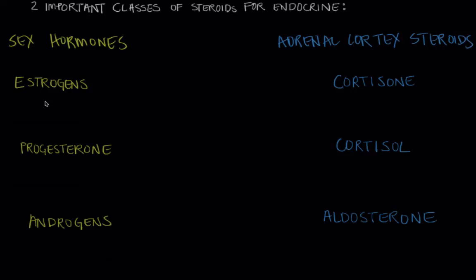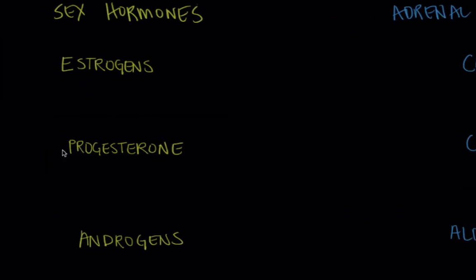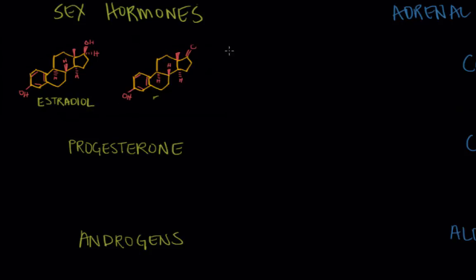And so with the sex hormones I mentioned before estrogens. And we have estradiol and estrone and you can see their steroid backbone and those are predominantly made in the ovaries and they're principally involved in secondary sex characteristics for females.